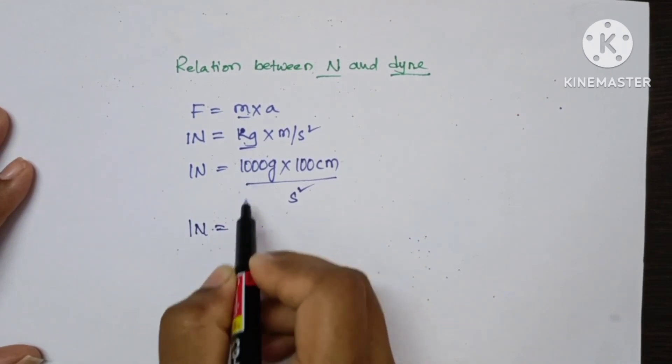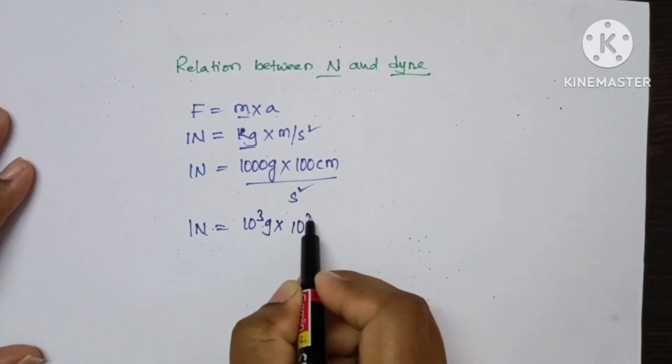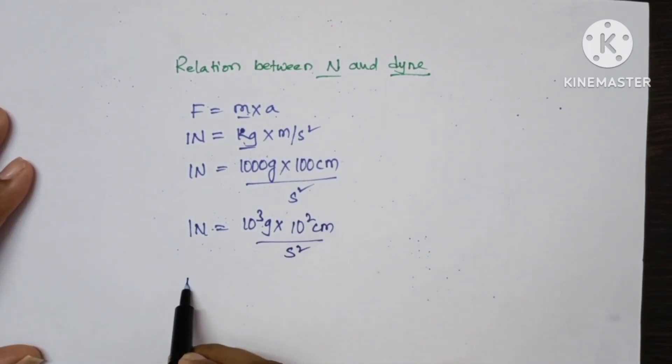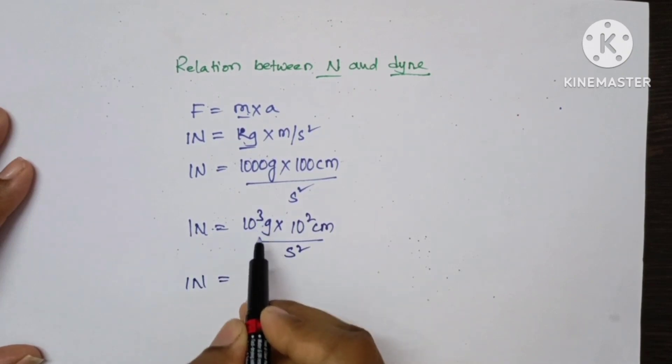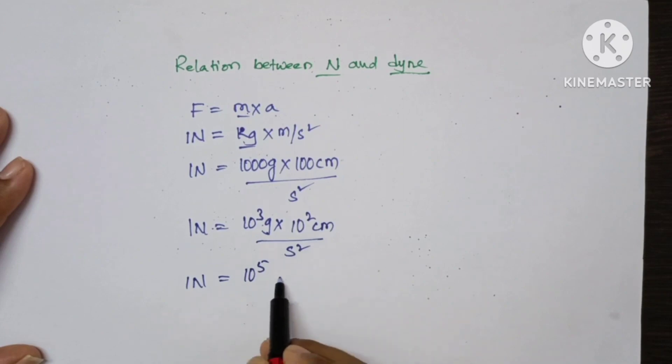So 1 Newton is equal to, this can be written as 10 cube grams and this can be written as 10 square centimeter upon second square. So 1 Newton is equal to 10 cube plus 10 square, 10 to the power of 5 gram centimeter per second square.